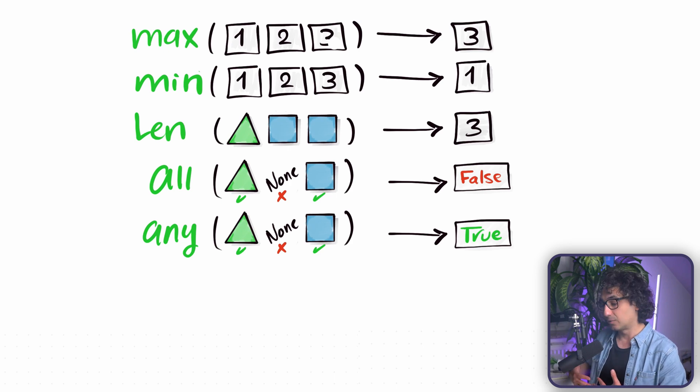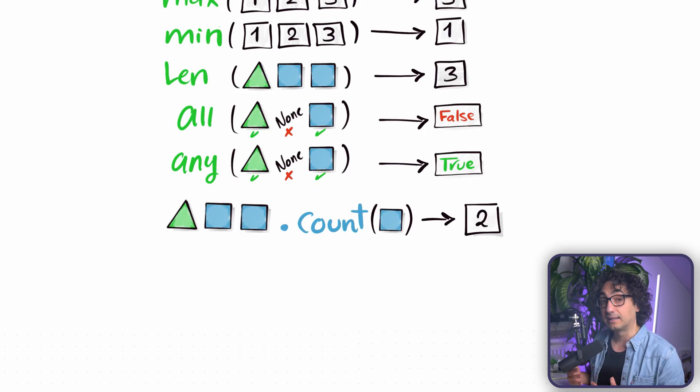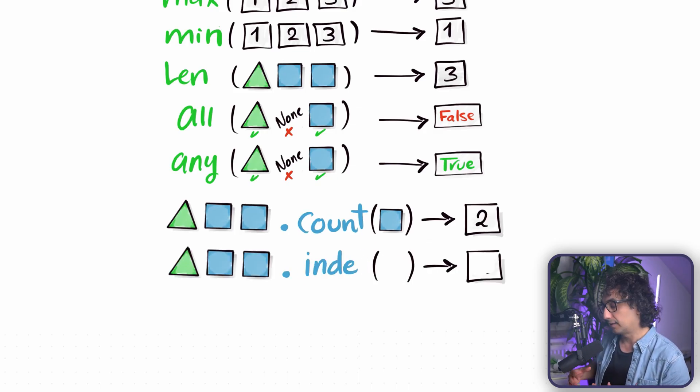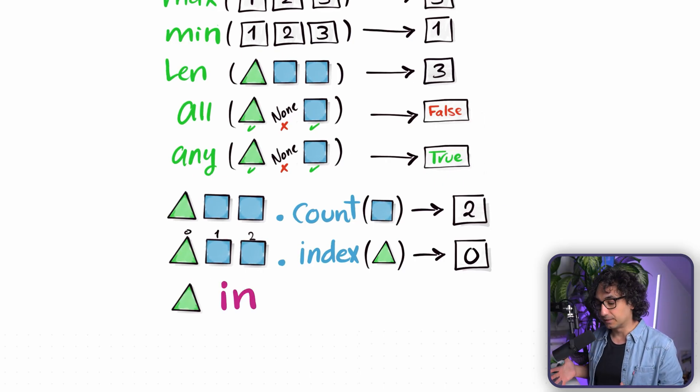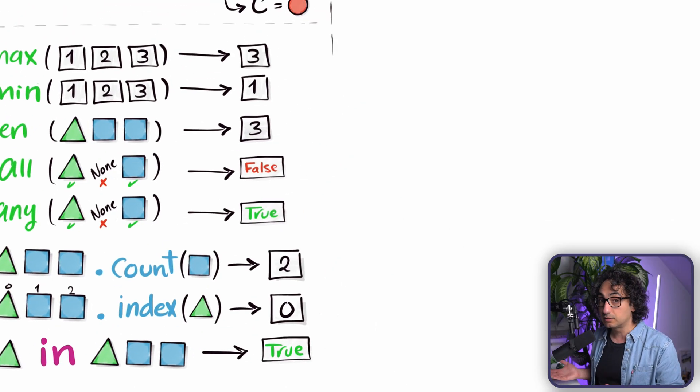As well, we have other methods that's going to help us to analyze our list, like the count. It's going to tell us how many times an item appears in our list. Another method called index in order to find out where exactly we can find our item, the position number. And as well, we could use operators in order to analyze our list using the in operator, so we are asking, is this item a member of our list or not?